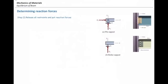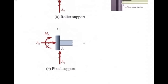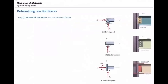The third type is the fixed support, which has three unknowns: two forces and one moment. In the real world, it connects both the top and bottom parts as well as the middle part of the beam, which is what distinguishes it from the other support types.